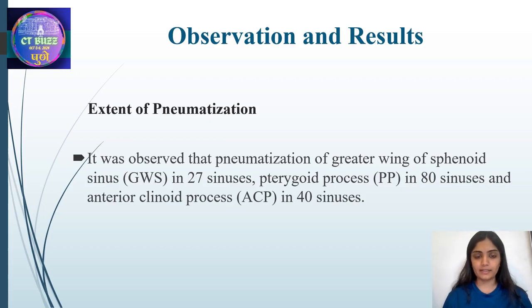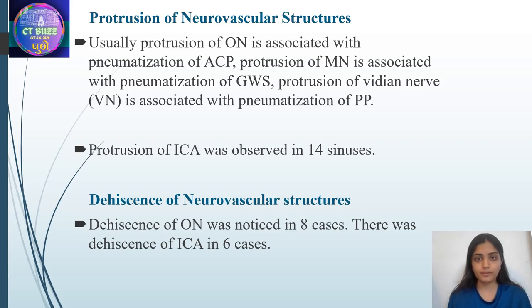Observations and Results – Extent of Pneumatization: It was observed that pneumatization of the greater wing of sphenoid (GWS) occurred in 27 sinuses, pterygoid process (VP) in 80 sinuses, and anterior clinoid process (ACP) in 40 sinuses. Protrusion of the optic nerve is associated with pneumatization of the anterior clinoid process. Protrusion of the maxillary nerve is associated with pneumatization of the greater wing of sphenoid. Protrusion of the vidian nerve is associated with pneumatization of the pterygoid process. Protrusion of ICA was observed in 14 sinuses. Dehiscence of the optic nerve was noticed in 8 cases, and dehiscence of the internal carotid artery in 6 cases.